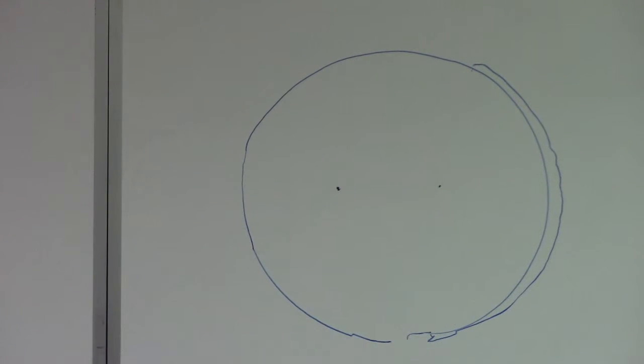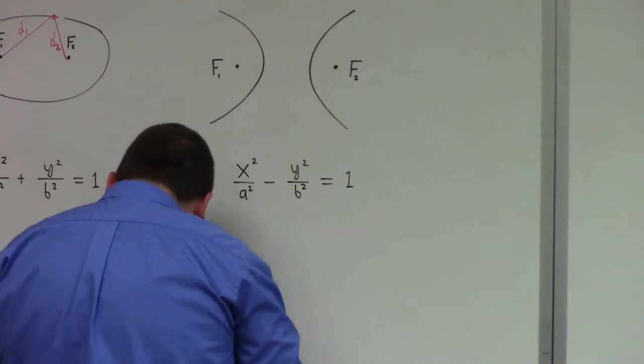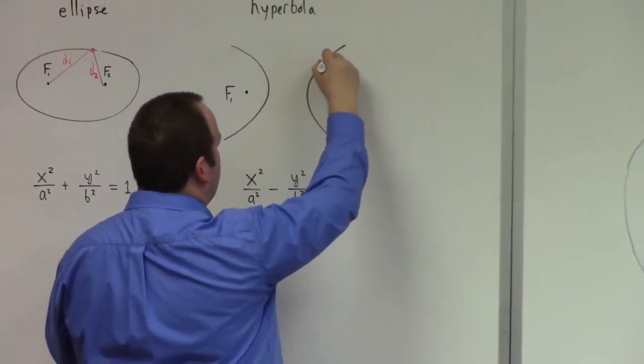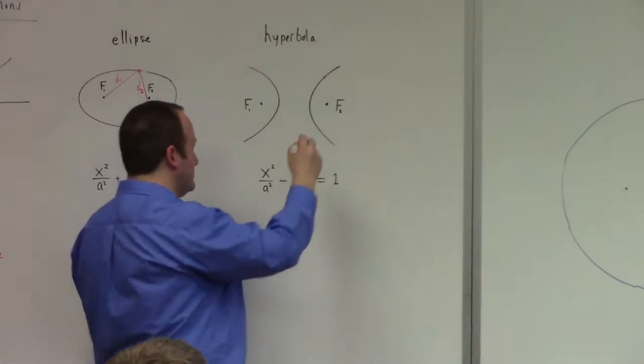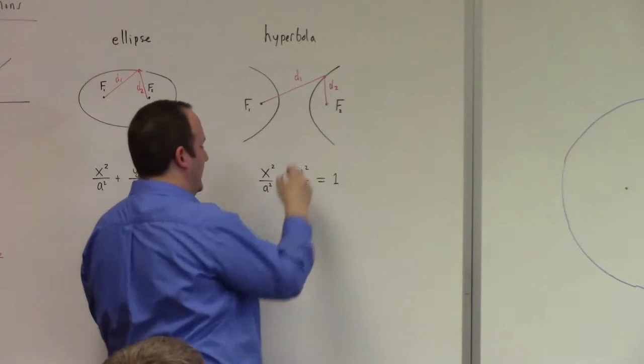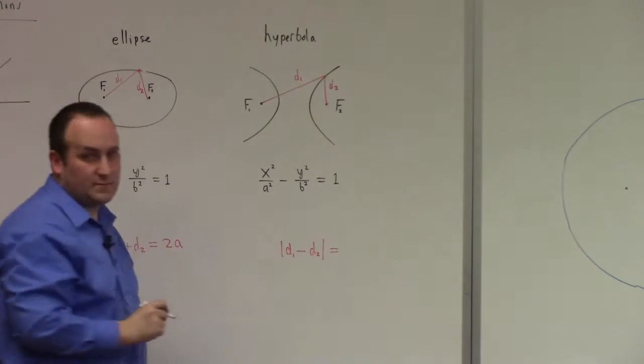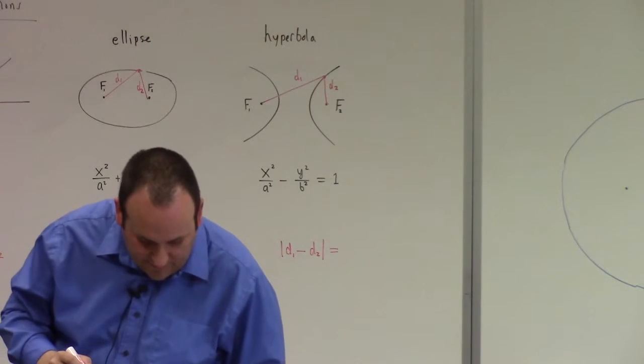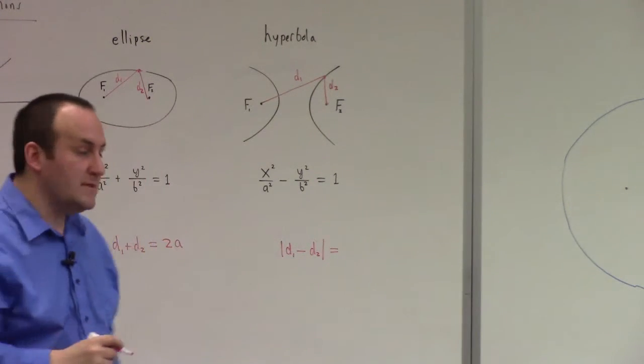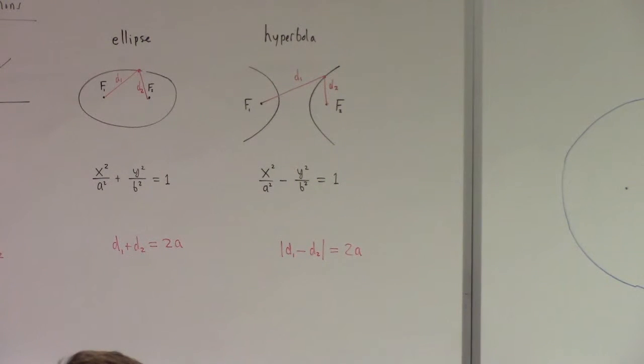The point is, you can draw ellipses by taking a fixed length of string and stretching it over two pegs and just tracing out the collection of points that you get. What you have is the rest of the string, which is D1 plus D2, equal throughout the collection of the points. When these two points become the same point, you get a circle.